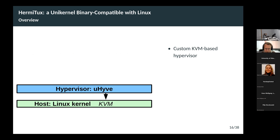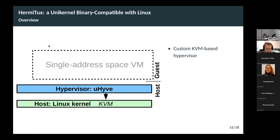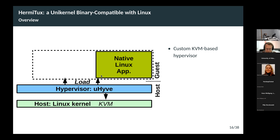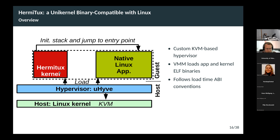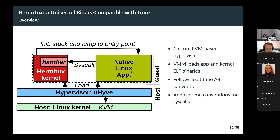From a high-level point of view: we have a custom hypervisor using KVM to create a single address space virtual machine. In this virtual machine, it loads the application ELF binary alongside a minimal kernel we developed. At runtime, the kernel crafts a stack, sets the registers according to the Linux ABI, and jumps to the entry point of the application. At runtime, the application triggers system calls using the previously defined convention, and we have a handler in our kernel that intercepts the system calls and manages them, emulating Linux behavior.